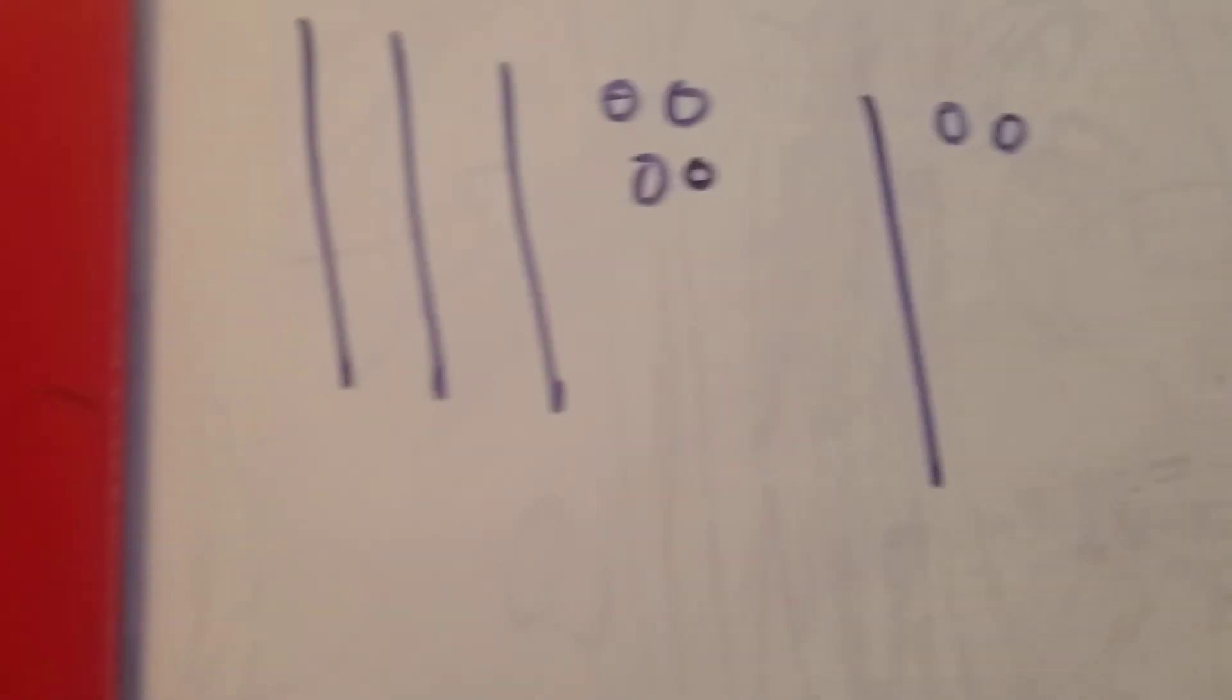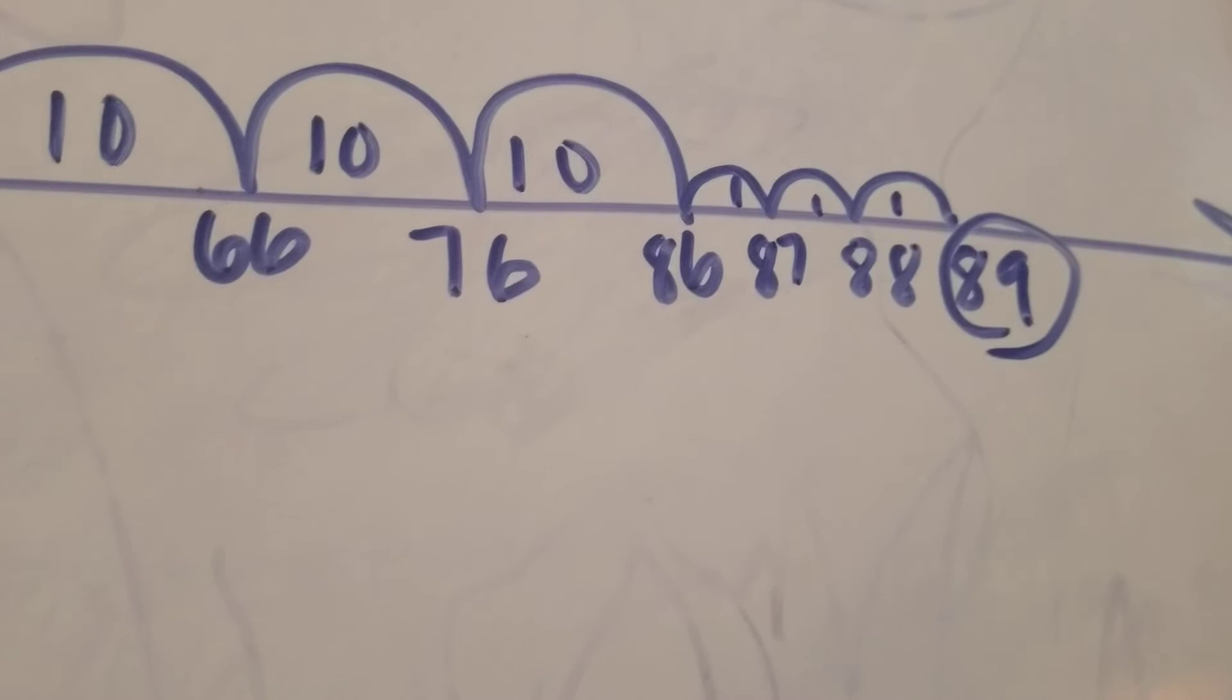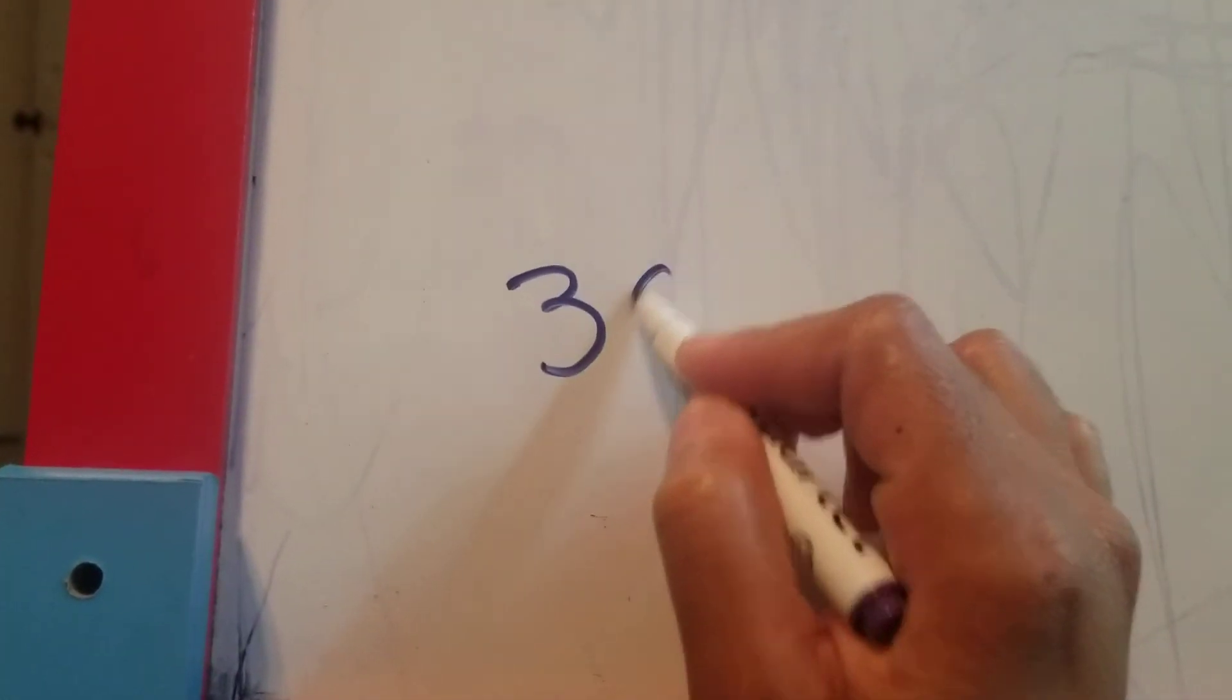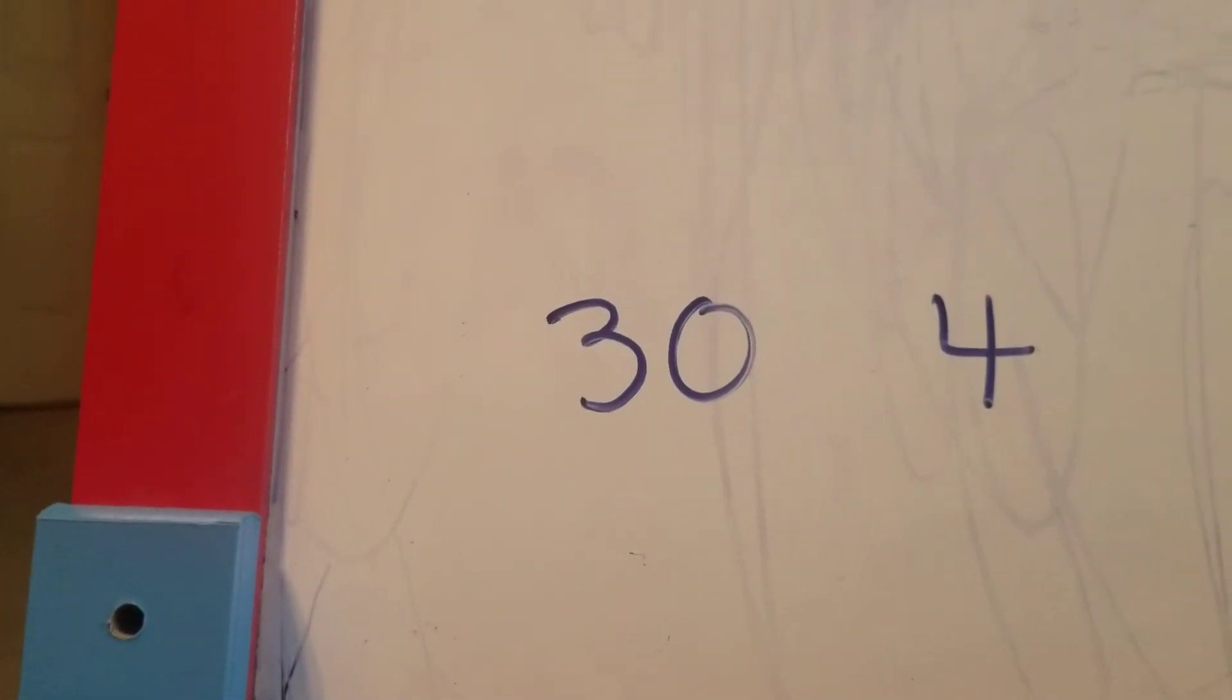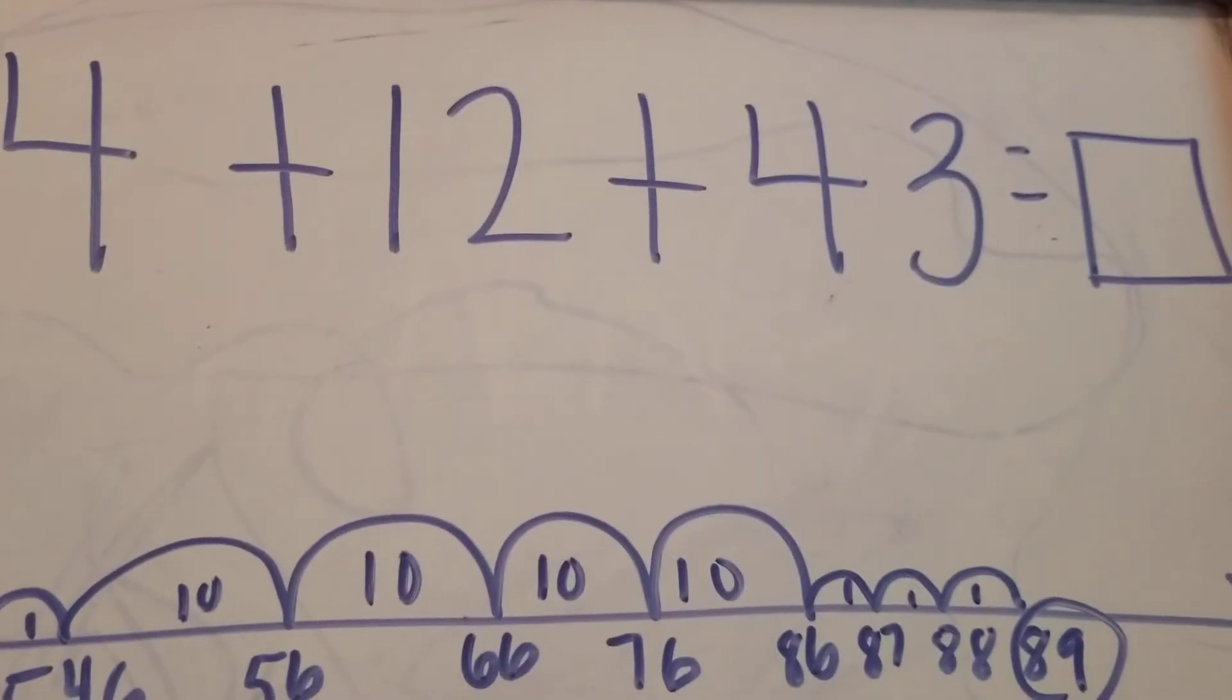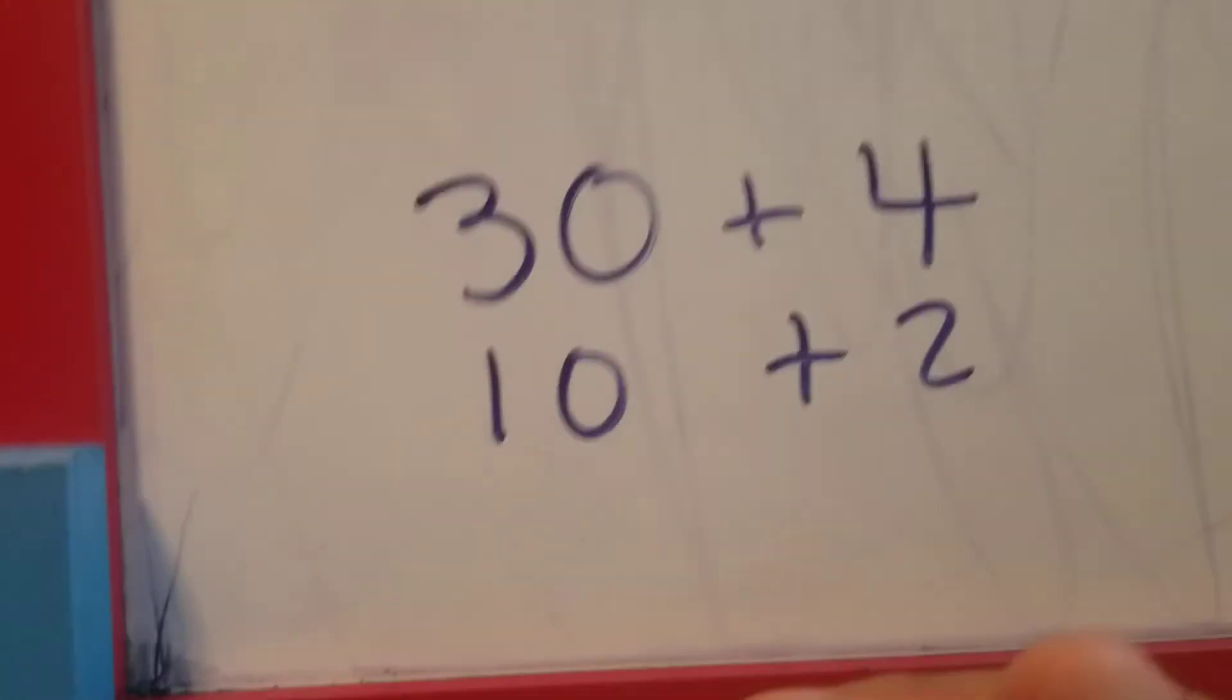I had 89 using my tens and ones, and I had 89 using my number line. The last part that we're going to work on today is place value. I know that 34 is 30 plus 4, 12 is 10 plus 2, and I know that 43 is 40 plus 3.